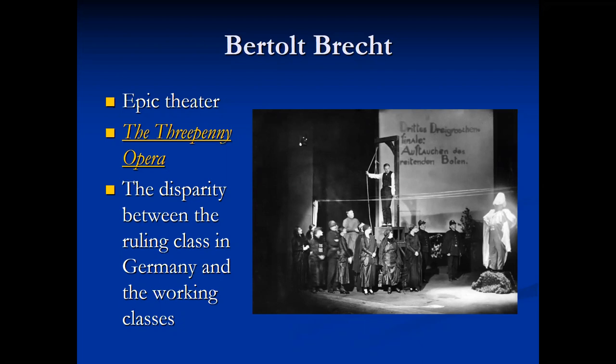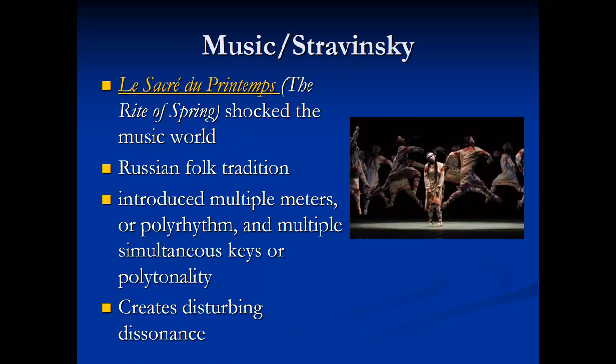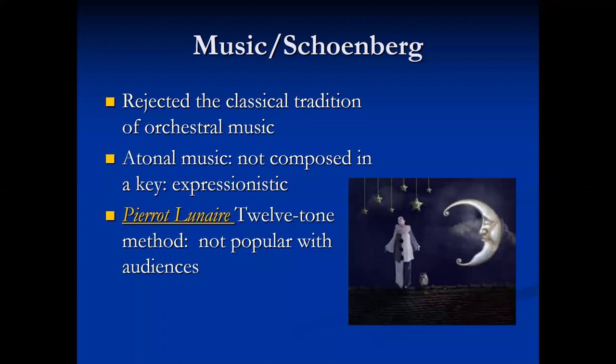20th century music also tended to reject convention. Stravinsky's 1913 ballet The Rite of Spring shocked the music world and incited a small riot at its opening. Stravinsky used costuming from Russian folk tradition and created a score with multiple meters or polyrhythm and multiple simultaneous keys or polytonality, creating a disturbing dissonance. Arnold Schoenberg also rejected the classical tradition of orchestral music with his use of atonal music — music that is not composed in a key. His 12-tone method was not popular with audiences. On your own, listen to a sample of Stravinsky's Rite of Spring and Schoenberg's Pierrot Lunaire.